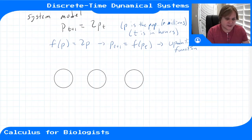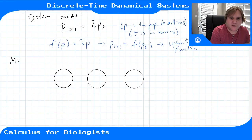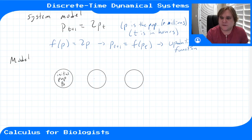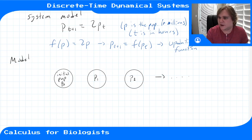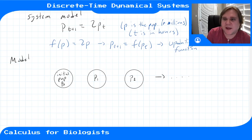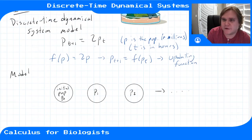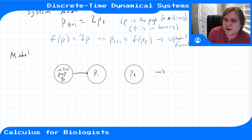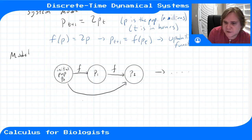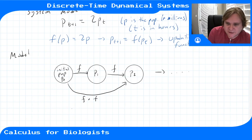The way the model works is: starting with an initial population p0, it gives you the population an hour later, p1. You can keep going — get the population an hour after that — by applying this discrete time dynamical system over and over again. The map from p0 to p1 is the updating function f, and the map from p1 to p2 applies f again, so the map from p0 straight to p2 is f composed twice.